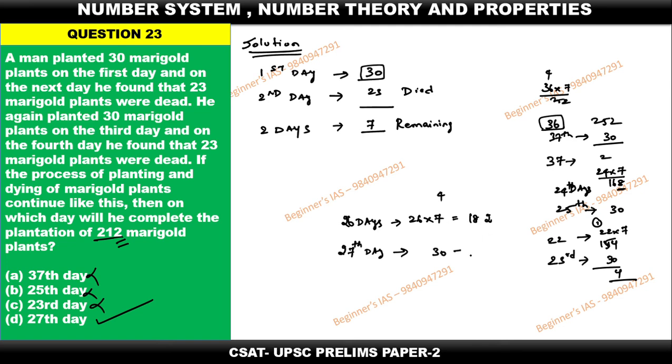Then add this 30. On the 27th day, you are getting 212. Yes, the answer is on the 27th day he is completing all 212 marigold plantations.